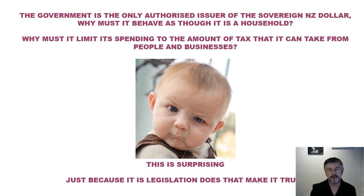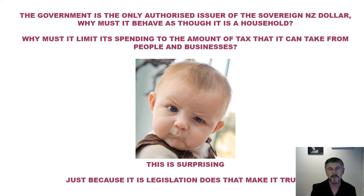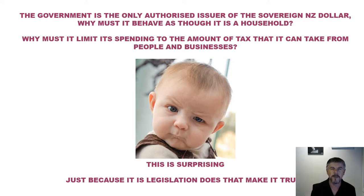Governments don't seem to understand what they're doing, and none of them question the status quo — nor does the media. The questions we need to ask are: is the government the only authorised issuer of the sovereign New Zealand dollar? Why must it behave as though it's a household? Why must it limit its spending to the amount of tax it can take from people and businesses? It imagines it must take money off people and businesses before it can spend — and this is entirely incorrect.